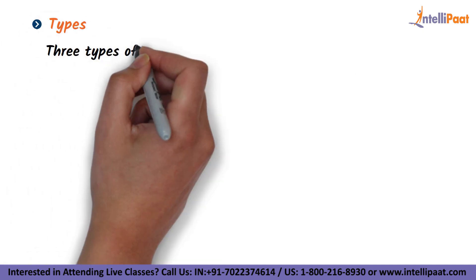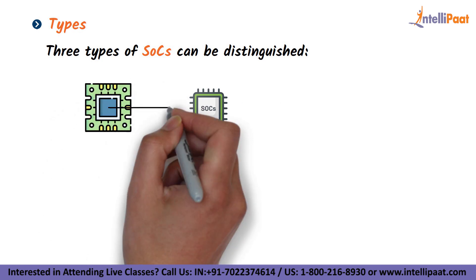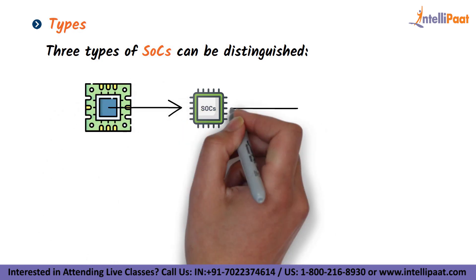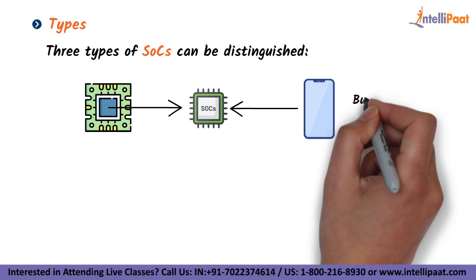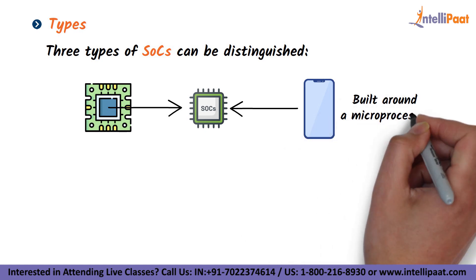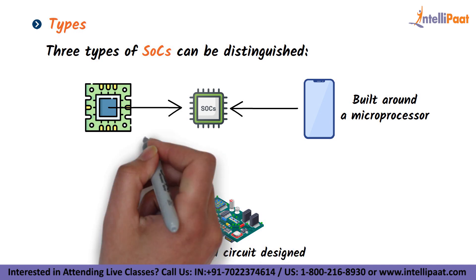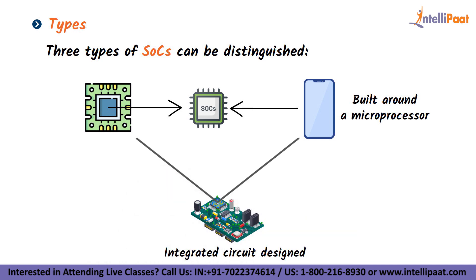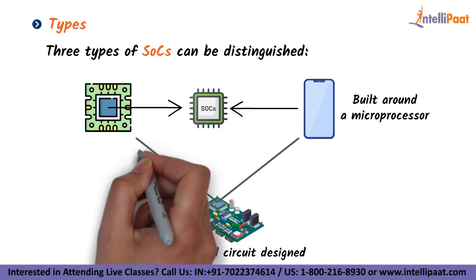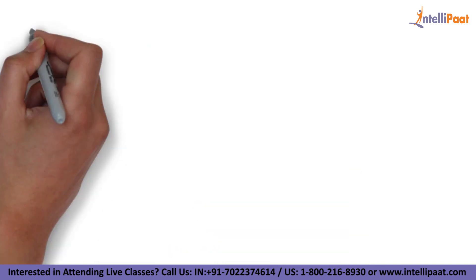There are three types of SoCs. First, we have SoCs centered on a microcontroller. Then we have SoCs built around a microprocessor, which are typically seen in mobile phones. Lastly, there are integrated circuits designed specifically for a certain application — SoCs made for particular applications that don't fall into either of the previous two categories.